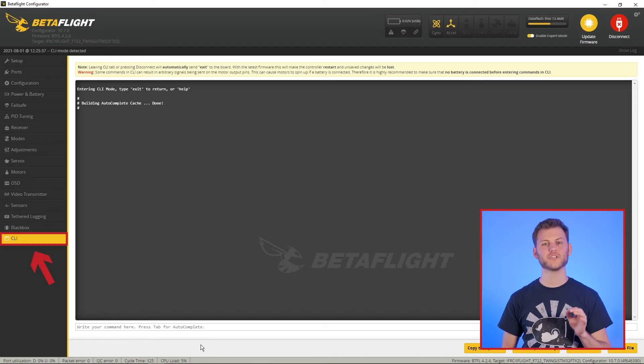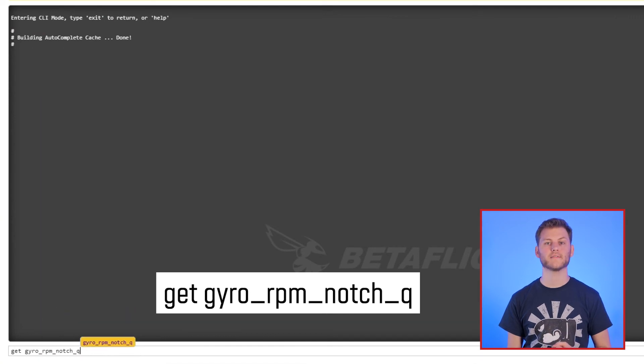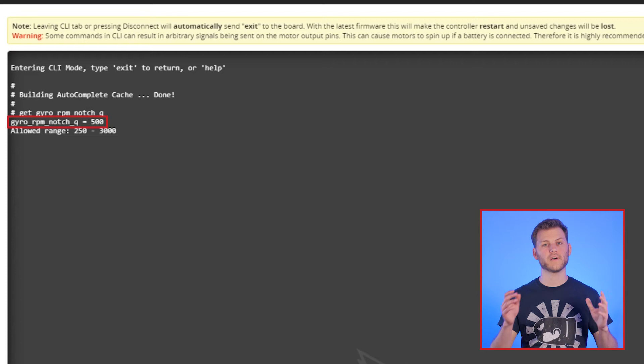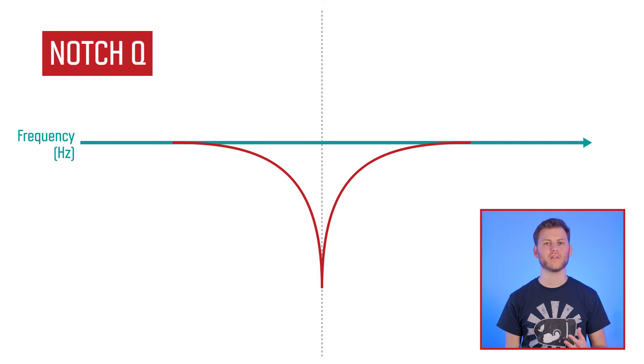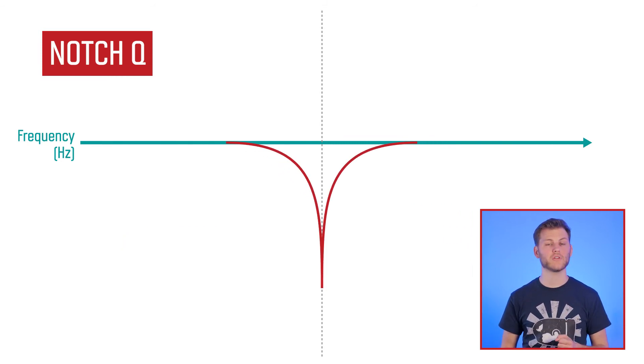There is one last important setting. At this time with Betaflight 4.2, it is actually hidden in the CLI. It is the RPM notch Q. You can type get gyro RPM notch Q to see it. The default value is 500 and you can use a value between 250 and 3000. When I explained how notch filters worked in the beginning of this video, I didn't mention the Q value. This is actually what defines the width of a notch filter. A lower Q value will increase the width and the higher Q will make it thinner. It will also have an impact on your phase delay since filtering a wider range of frequencies will result in a bigger phase delay.